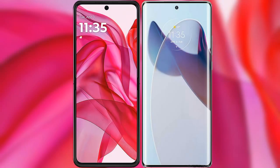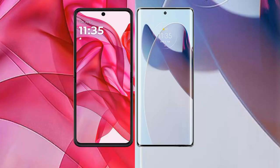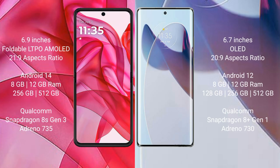We will compare the new Motorola Razr 50 Ultra with the Motorola Moto X30 Pro. The Motorola Razr 50 Ultra comes with a 6.9-inch LTPO AMOLED display with an aspect ratio of 21:9. The Motorola Moto X30 Pro has a 6.7-inch OLED display with an aspect ratio of 20:9.